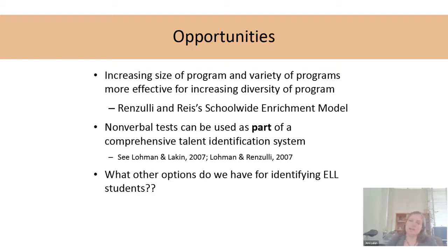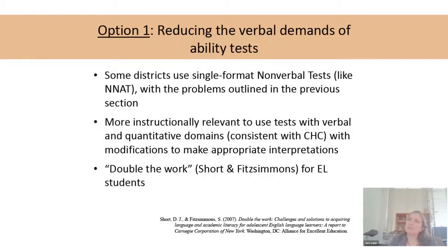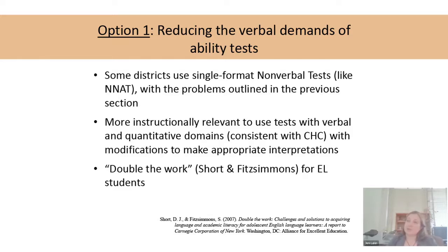How do you interpret scores like COGAT in a way that helps you understand their needs? People want to eliminate verbal reasoning, but it's actually so important to academic domains anyway — especially for English learners who are doing double the work. It's important to have those verbal measures.